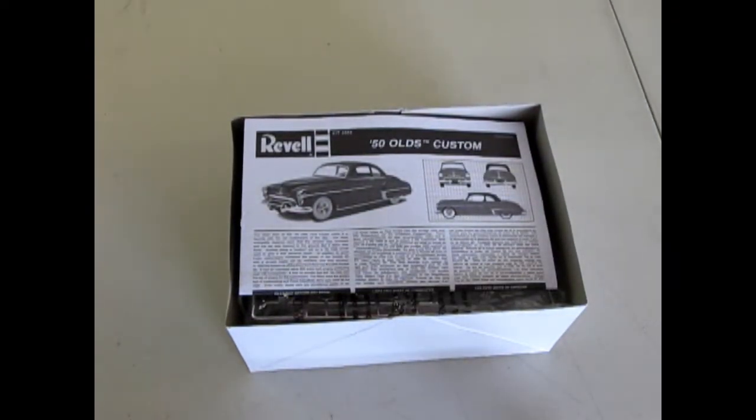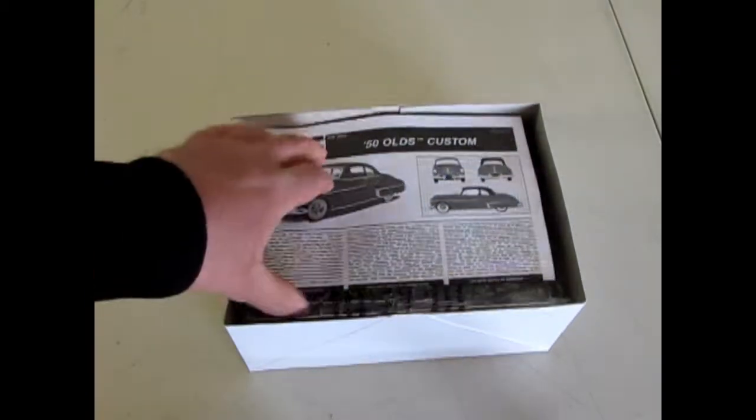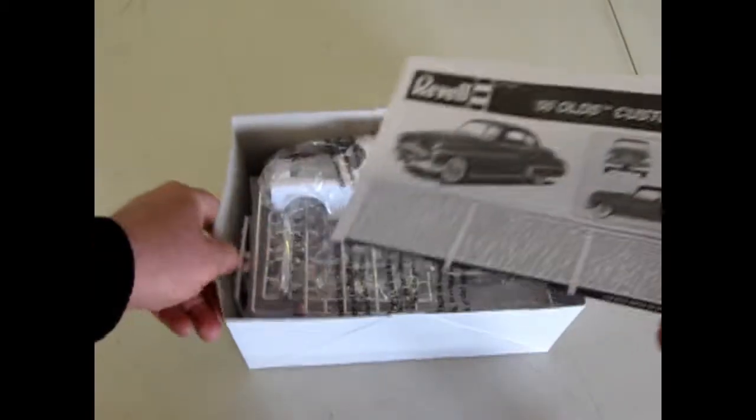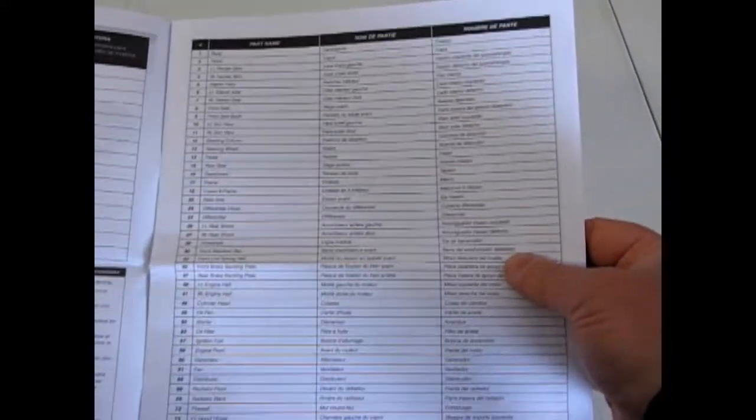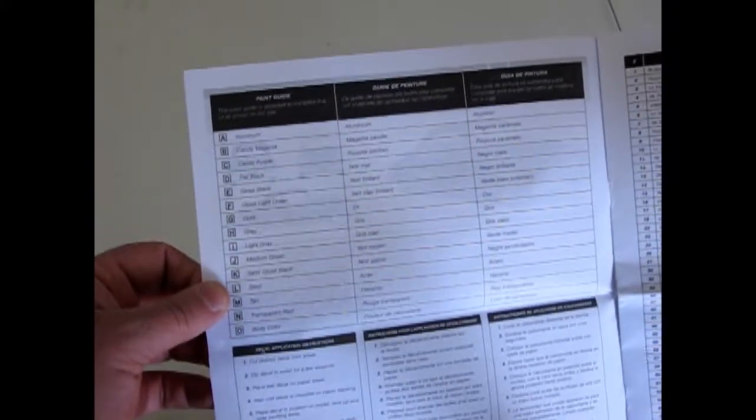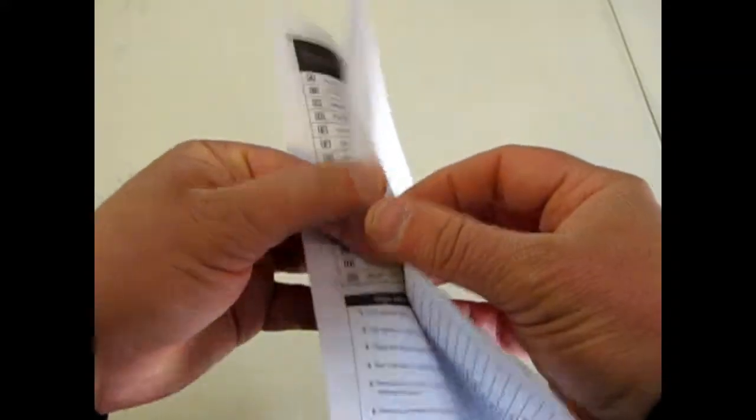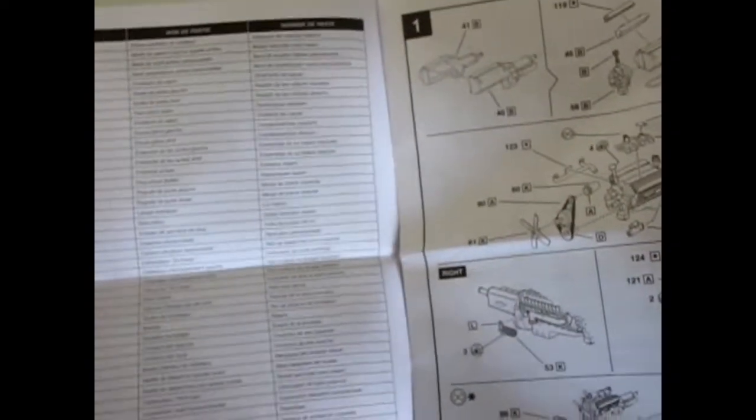And as we open up the lid, we're confronted with a very nice instruction sheet. And here they list off all the body parts that come with the kit, as well as a paint chart. And there's a lot of pieces to the kit.